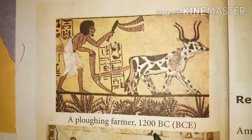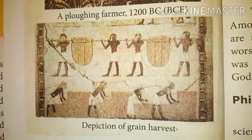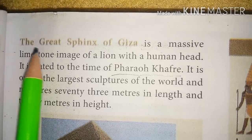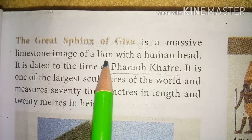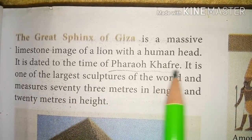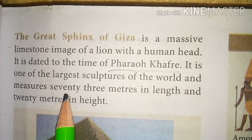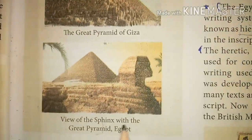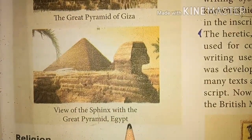Depiction of a plowing farmer, 1200 BC, and a depiction of grain harvest. The Egyptians excelled in art and architecture. Writing is also considered a form of art. Numerous sculptures, paintings and carvings attest to the artistic skills of Egyptians. The pyramids are massive monuments built as tombs of the Pharaohs. The great pyramids near Cairo are known as the Giza pyramids. The Great Sphinx of Giza is a massive limestone image of a lion with a human head, dated to the time of Pharaoh Khafre. It is one of the largest sculptures in the world, measuring 73 meters in length and 20 meters in height.